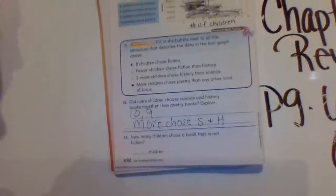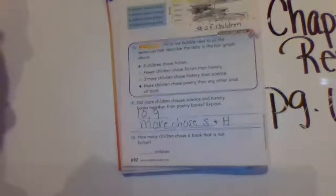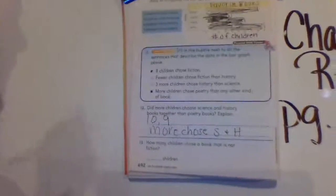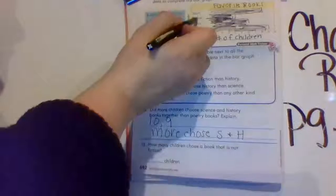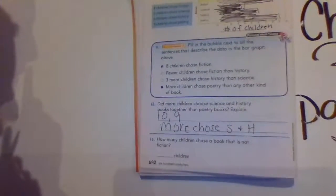All right, how many children chose a book that is not fiction? So fiction means fake. So I would say that science, history, and poetry would all count for this, although I don't really think poetry would count, but we're going to count it. So 4 plus 6 equals 10, 10 plus 9 equals 19 children.